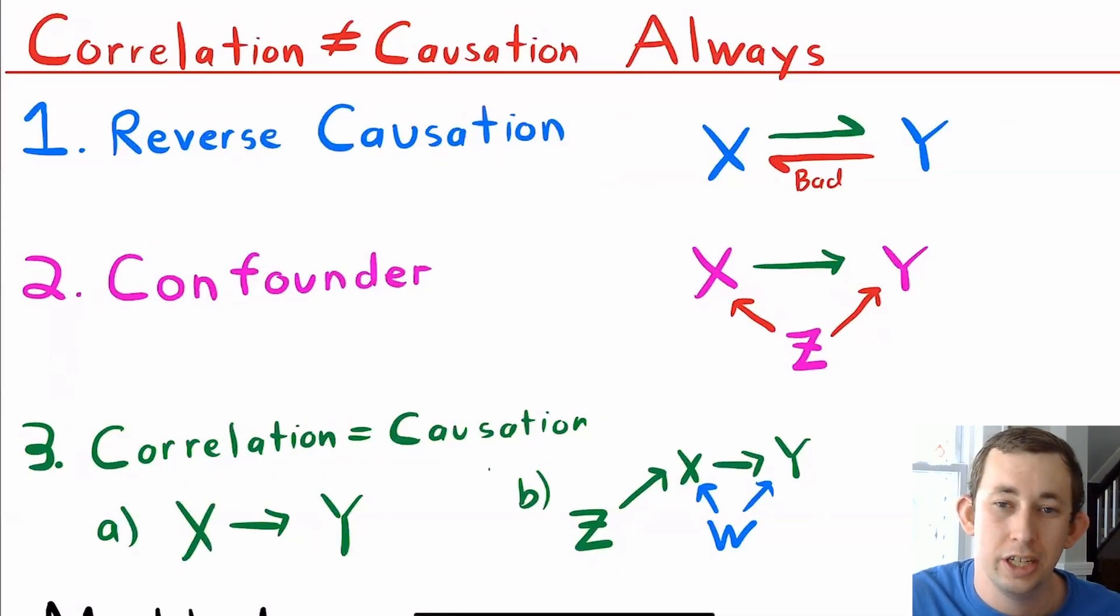And again, these are just the three main ways two variables could be correlated, where one and two are sort of bad and we're trying to get away from that. And if we have three, then we're in a good situation, and we can show that correlation is indeed causation.